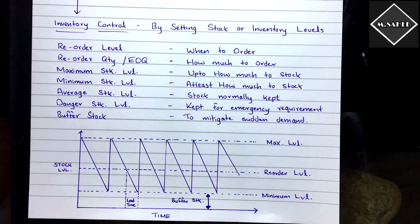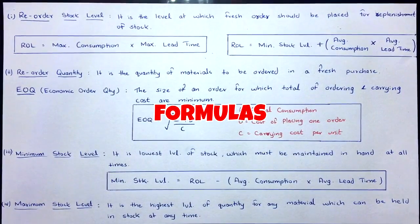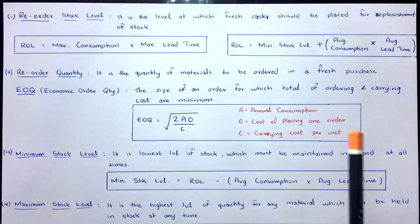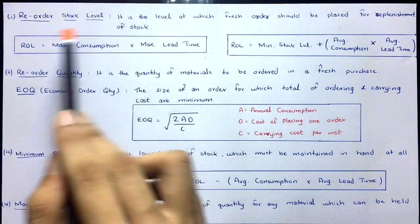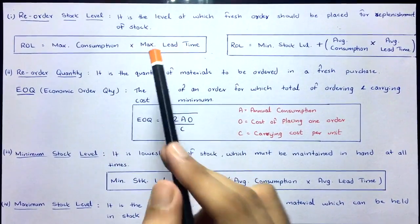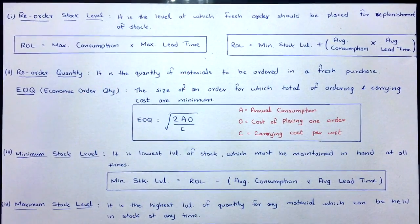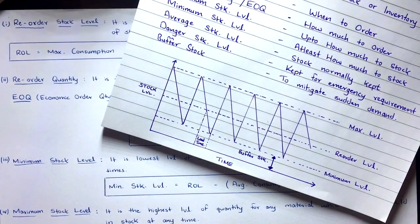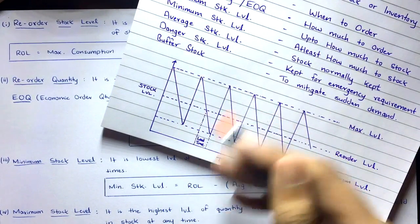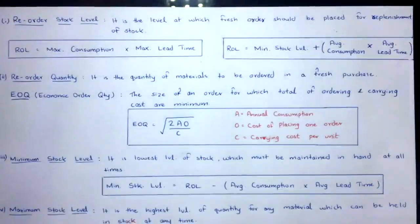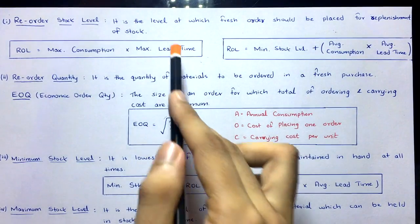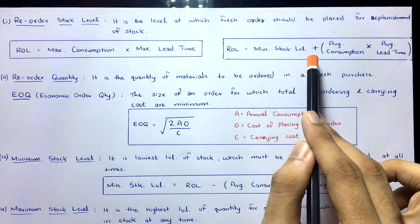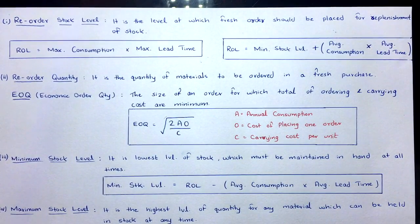Now let's see the formulas. The reorder stock level is the level at which a fresh order should be placed for replenishment. There are two formulas: Formula 1 — maximum consumption × maximum lead time. Formula 2 — minimum stock level + (average consumption × average lead time). Maximum consumption is the maximum amount consumed from the warehouse (sent to production) in a given period.